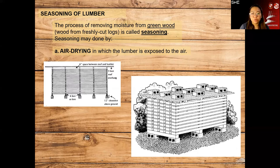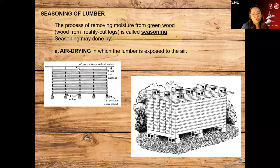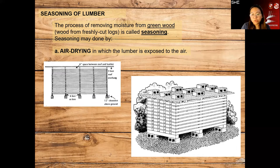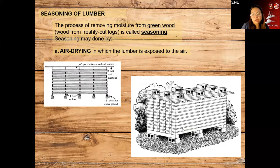One method is air drying, in which the lumber is exposed to air. The lumber must be elevated at least 12 inches clearance from the ground. There should always be spaces between the lumber and the covering roof — at least 6 inches. The pieces are spaced apart and staggered so air circulates, allowing the bottom and top parts to dry properly.